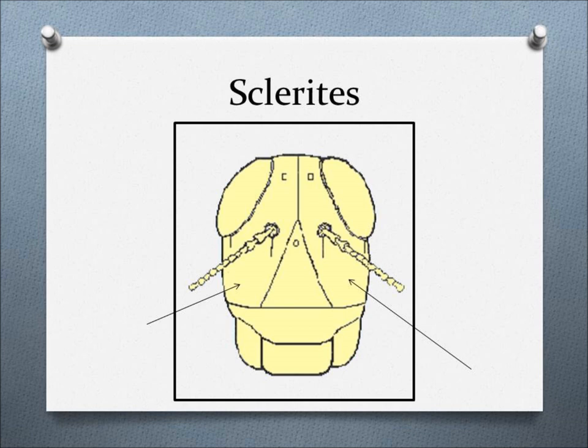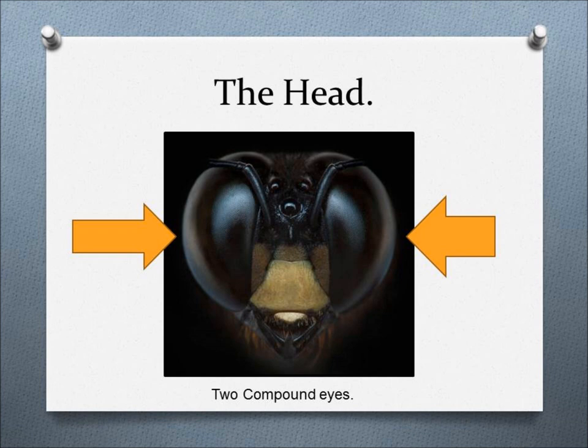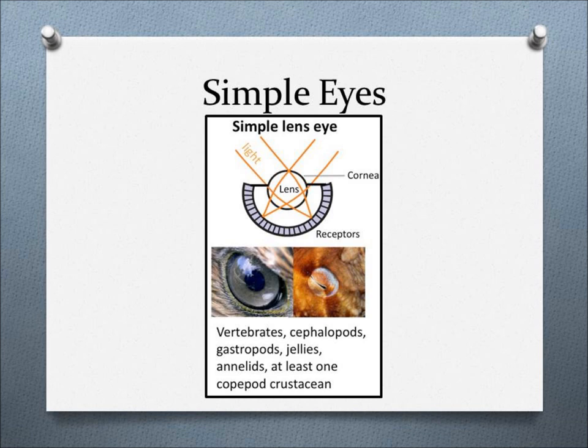The head of an insect is composed of numerous plates, or sclerites. The sclerites are fused together to form a solid capsule that can hold one to three simple eyes, two compound eyes, one pair of antennae, and mouthparts.